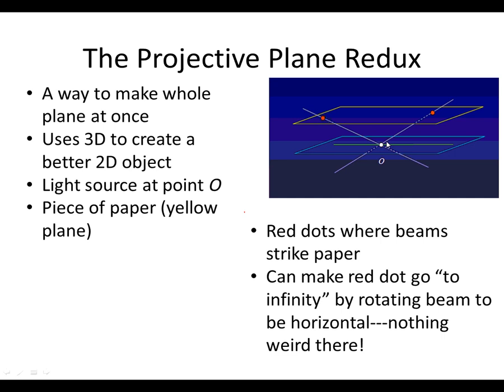The place where the red dot would have shown up has zoomed off to infinity. We've all seen this, like shining a flashlight against a wall. If you turn the flashlight so the beam is parallel to the wall, the spot of light zooms off and seems to go off to infinity. You can invent points at infinity by just taking this beam and rotating it to be horizontal. There's nothing really weird about that.